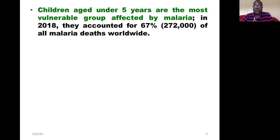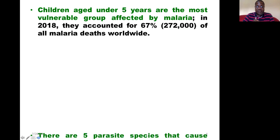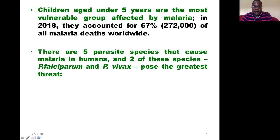The worst affected group of people is children aged under five years, who are the most vulnerable group affected by malaria. They accounted in 2018 for 67% of the total number of people who died from malaria. So children under the age of five years are the most affected.